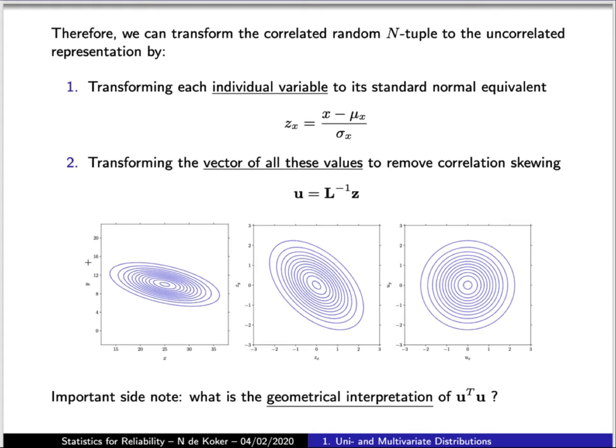To illustrate that point in two dimensions, we start off with our two normally distributed random variables that have some correlation between the two. We first standardize each one of them so that we now have the x and y axes centered on 0 and normalized such that they have a variance of 1.